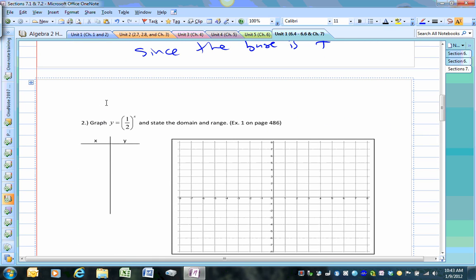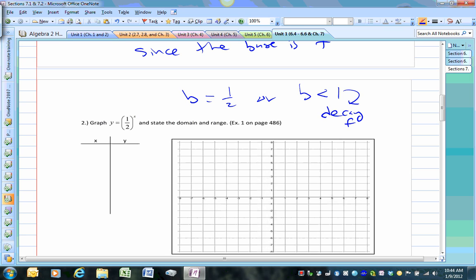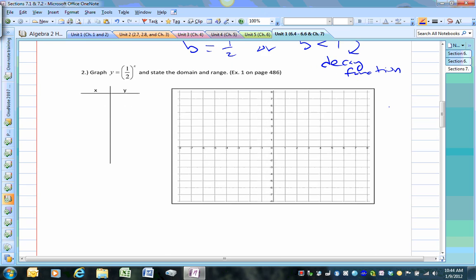Let's look at another graph. Now, in this case, b equals 1 half or b is less than 1. When that happens, we have what we call a decay function. And you can look at an example on page 486. Take a close look at this one. So, if I plug in 0, I still get 1. Plug in 1, I get 1 half. Plug in 2, I get 1 fourth. But if I plug in negative 1 or negative 2, I would get 2 or 4.